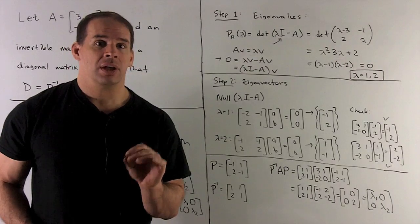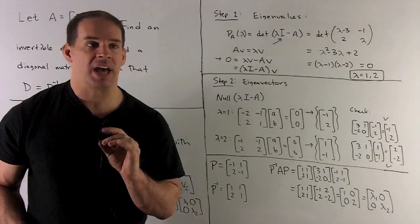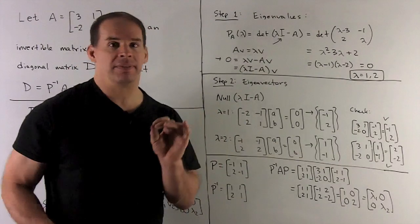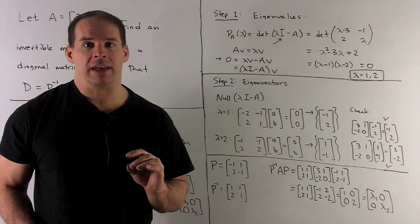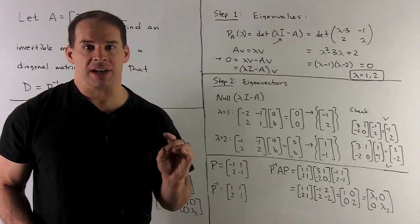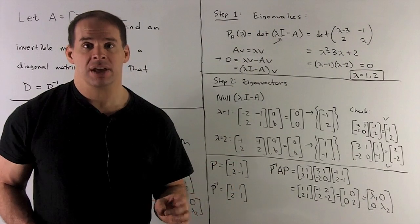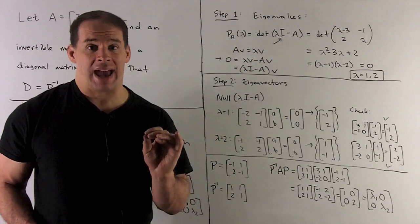That might seem a little mysterious, but that's just rewriting the equation we're trying to solve. We want to solve AV equals lambda V. I move the AV to the other side. That gives me lambda V minus AV. I factor the V out. I get lambda I minus A, parentheses, times V equals zero. Now, why the I?